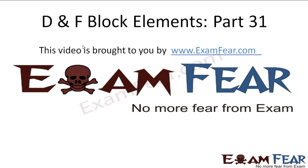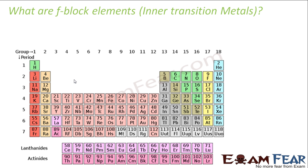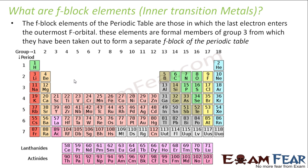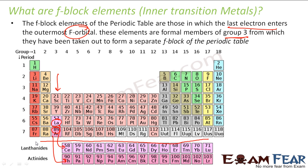This video on F-block elements is brought to you by examfea.com. F-block elements are called inner transition elements; in these blocks, the last electron enters the F orbital. They are all part of group 3, extended from group 3. Starting from atomic number 57 for lanthanides and 89 for actinides, these are my F-block elements — lanthanides and actinides.